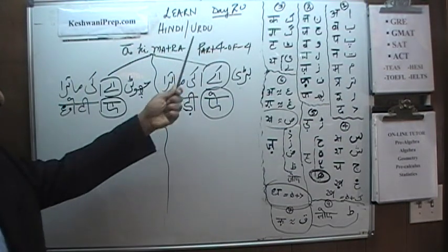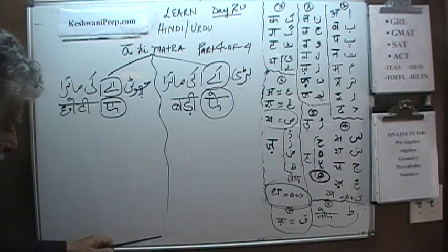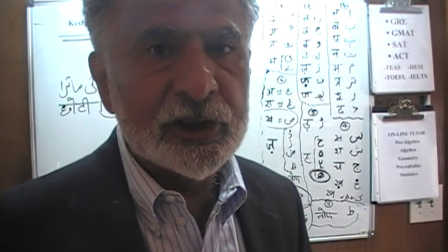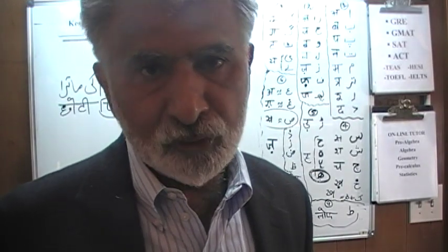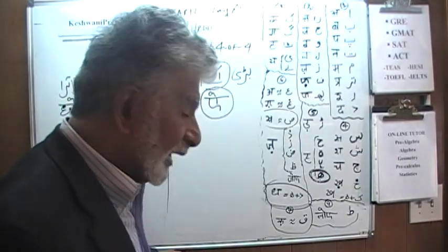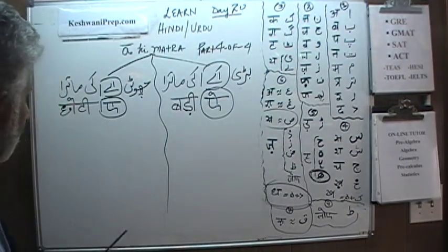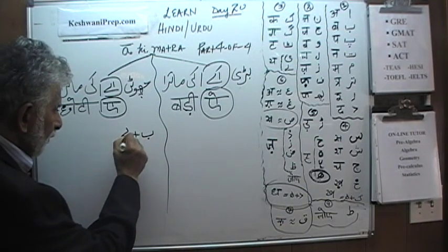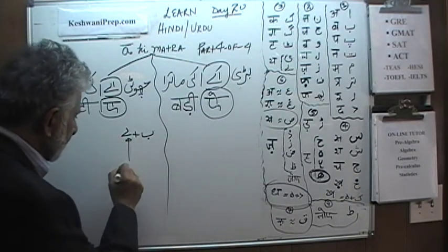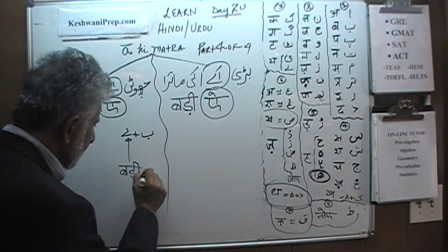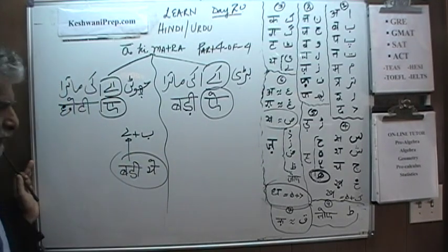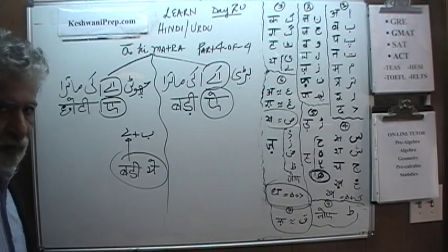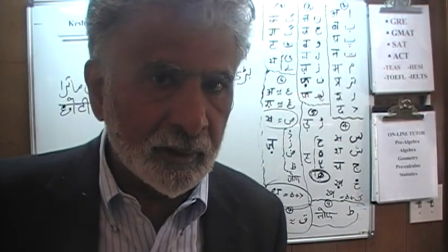As we already learned in the last three days — days 17, 18, and 19 — Eki Matra, just like Oki Matra and Uki Matra, comes in two flavors: Chhotiyeh and Badiyeh. Chhotiyeh is a short E sound and Badiyeh is a longer E sound. To make a Chhotiyeh in Urdu, you take your letter — for example B — and combine it with a letter called Badiyeh. Badiyeh also happens to be the very last letter of the Urdu alphabet.